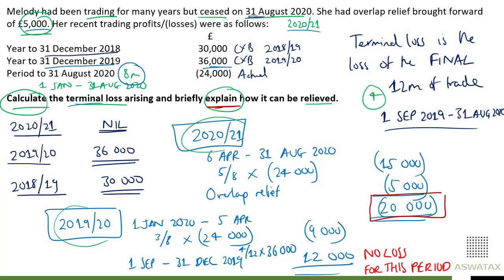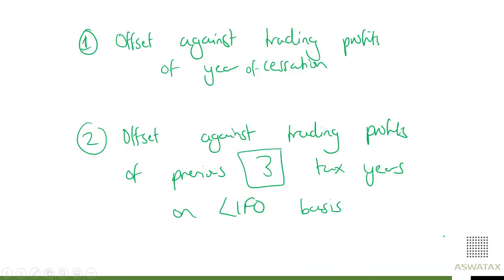In terms of mark allocation: half a mark for the calculation of the 2020-21 portion, half a mark for the overlap relief, half a mark for going back to the previous tax year, and half a mark for no loss in that period — giving two and a half marks for the calculation. Then half a mark for trading profits of the year of cessation, and half a mark for previous three tax years on a LIFO basis — total four marks.